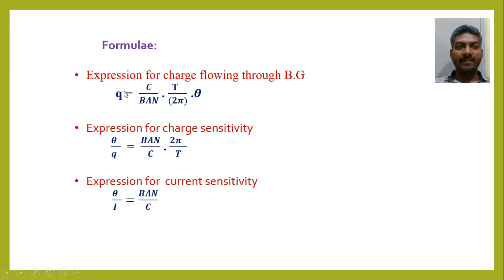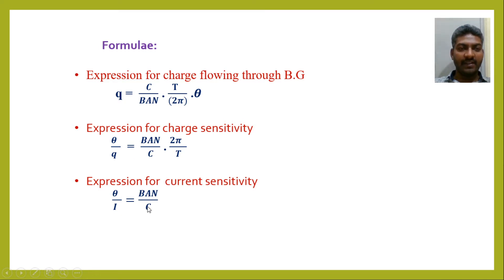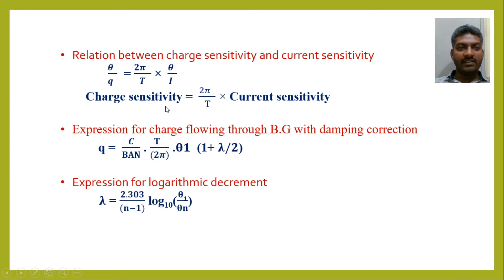First let us see the formulae. The expression for charge flowing through a ballistic galvanometer is given by q = (c/BAN) × (t/2π) × θ. The expression for charge sensitivity is θ/q = (BAN/c) × (2π/t). Here BAN/c is nothing but current sensitivity, which we write as θ/i. So charge sensitivity becomes (2π/t) times current sensitivity.